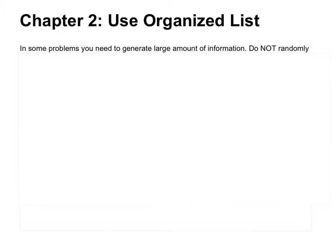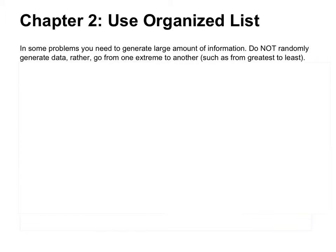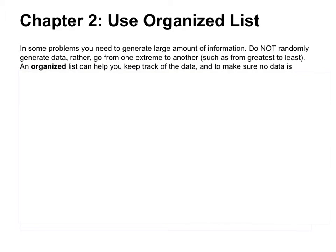Chapter 2: Use Organized Lists. In some problems, you need to generate a large amount of information or you need to count a lot of things. Do not randomly generate data. Rather, go from one extreme to another, such as from greatest to least. An organized list can help you keep track of the data and make sure no data is missing nor repeated.